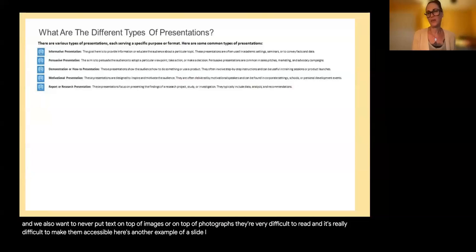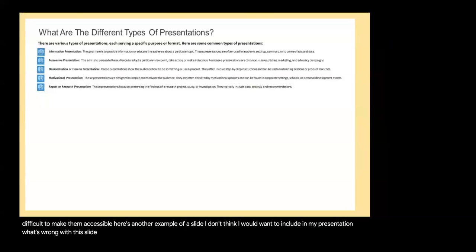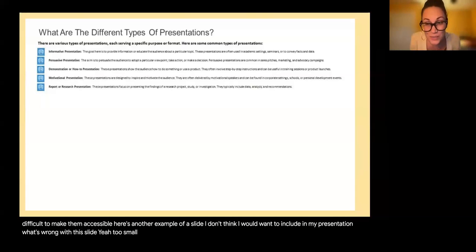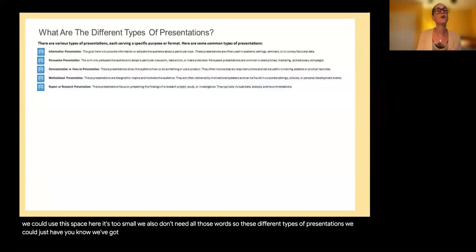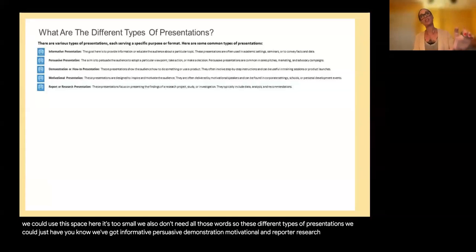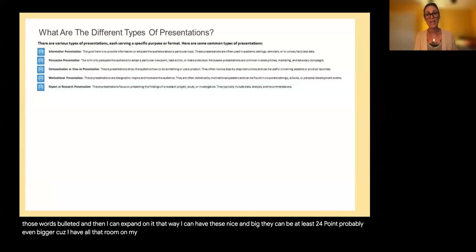Here's another example of a slide I wouldn't want to include. What's wrong with it? It's too small — I'm this close to my laptop and I can barely read it. We also don't need all those words. For types of presentations — informative, persuasive, demonstration, motivational, and reporter research — it could just be those words bulleted, and then I can expand on it. That way I can have them nice and big, at least 24 point, and then go into further detail.